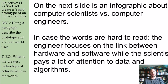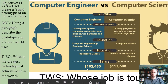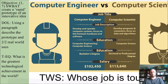On the next slide is an infographic about computer scientists versus computer engineers. These are two jobs that people often confuse. In case the words are hard to read, I'm going to type them right here. The engineer focuses on the link between hardware and software, while the scientist pays a lot of attention to data and algorithms. You can look around here at the differences between the two.